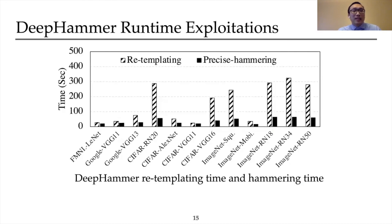Finally, let's look at the runtime statistics of DeepHammer's exploitation. This figure shows the average time it takes to perform re-templating and precise hammering. Our proposed Rowhammer exploitation requires less than 2 minutes to flip up to 24 bits across all models. Furthermore, even if the bit-flip profile is obsolete, with our proposed fast re-templating technique, DeepHammer only needs less than 5 minutes to quickly correct the wrong information, as opposed to a 28-hour regular memory template.